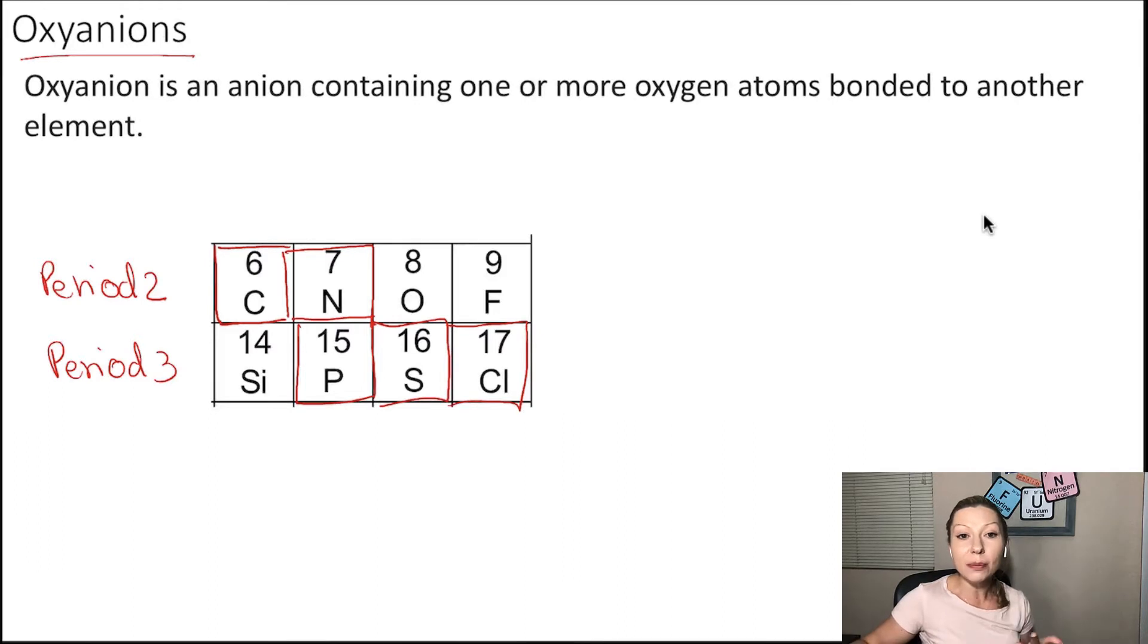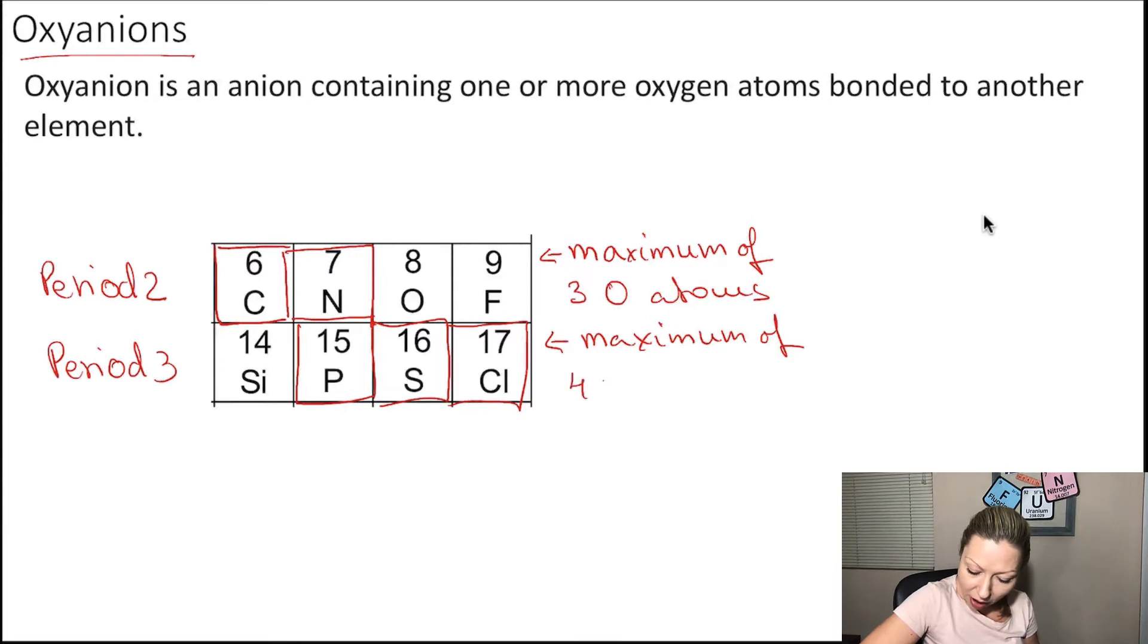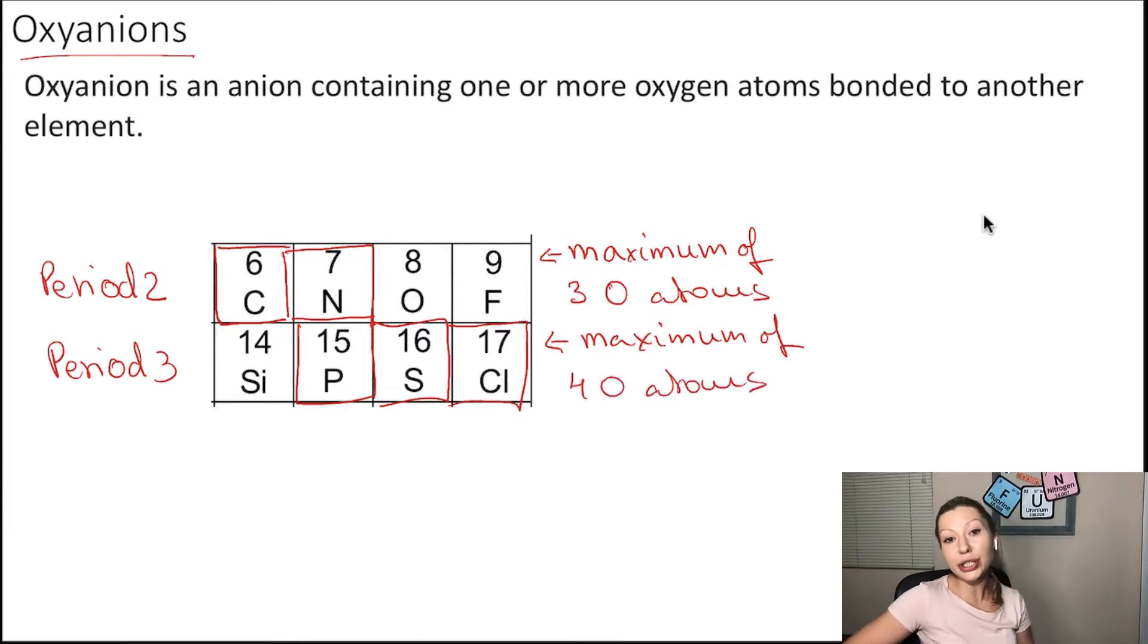There is a pattern based on which you can learn how to name them, what is their charge, so you don't have to memorize that much. First of all, in the second period, we can have a maximum of three oxygen atoms bonded to those elements. In period three, we can have a maximum of four oxygen atoms bonded to those elements.